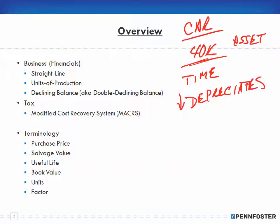The question becomes: how do we depreciate it? There are different methods to do that, and this is what this chapter is about. Pay attention to these methods — even though there are more methods than what's in this textbook, things like straight line, units of production, declining balance, and MACRS you'll see again in subjects like financial accounting and intermediate accounting, so get it down now.